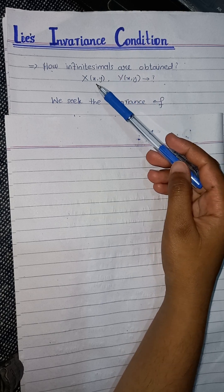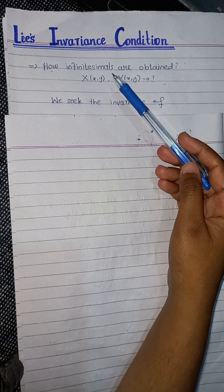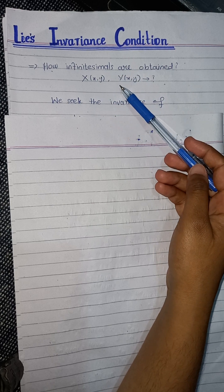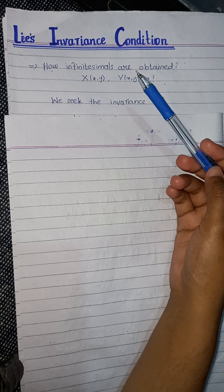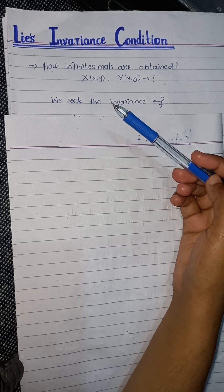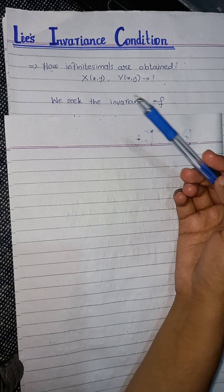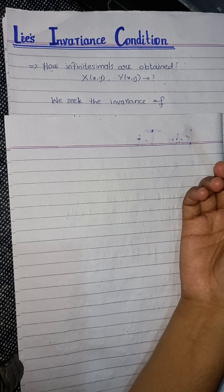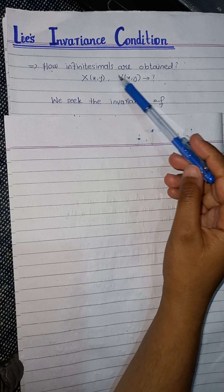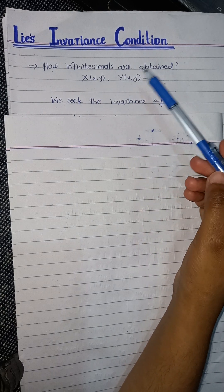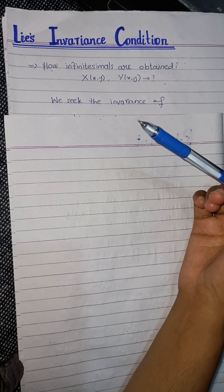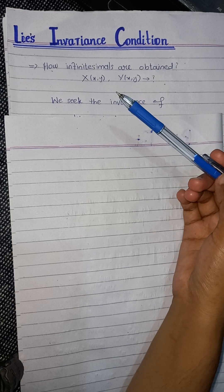In the previous lecture I told you that by using the infinitesimals that are given to us — capital X and capital Y — we can find the change of variables, and by using those change of variables we can convert our given ordinary differential equation into a separable equation that can be easily solved, no matter how difficult it is. Now the question is: how are these infinitesimals obtained? We will see what the least invariance condition is and how we can find these infinitesimals capital X and capital Y.